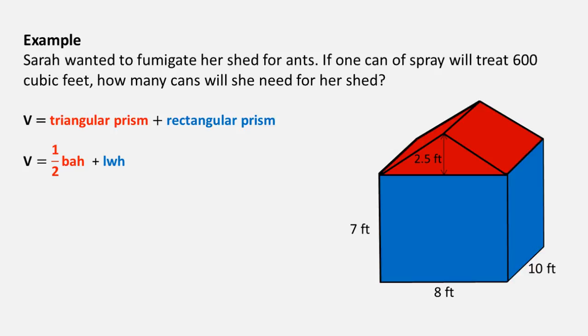Let's substitute the values from our diagram into our volume formula. This gives us volume equals 1/2 times 8 times 2.5 times 10, plus 10 times 8 times 7. Using our calculator, we find the volume is equal to 660 feet cubed.